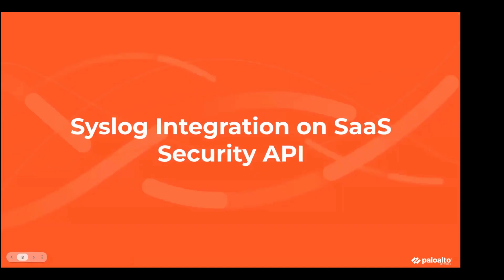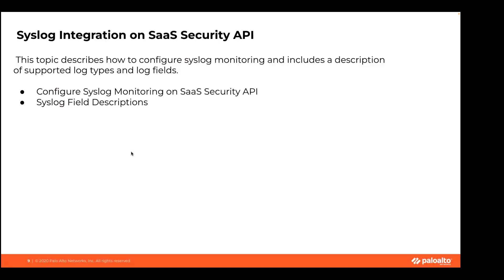Our next topic is syslog integration on SaaS Security API. Syslog is a standard log transport mechanism that enables the aggregation of log data from different sources into a central repository for archiving. SaaS Security API can forward every type of log it generates to an external syslog server. The syslog feature requires TLS 1.0 and above communications protocol for connections between SaaS Security API and the external syslog server. In this topic, we will describe how to configure syslog monitoring and share a description of supported log types and log files.